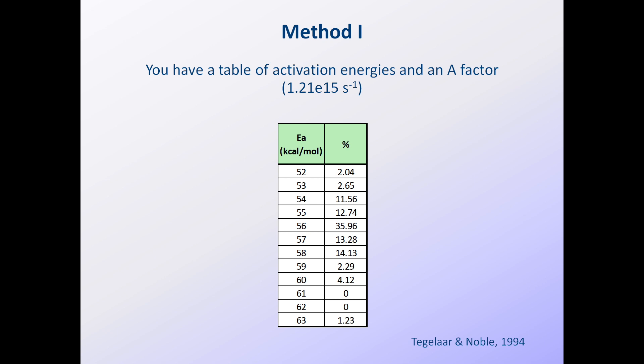Suppose that after much searching, you finally found some kinetic data, like the ones in this table, for a kerogen that you want to use in a modeling study. However, the A-factor provided for the kerogen is 1.21e15 per second, a value that seems to you to be too high.